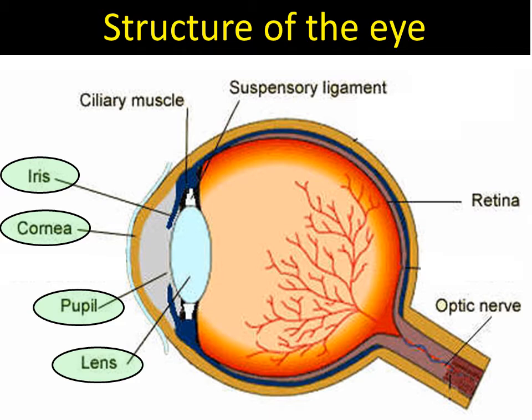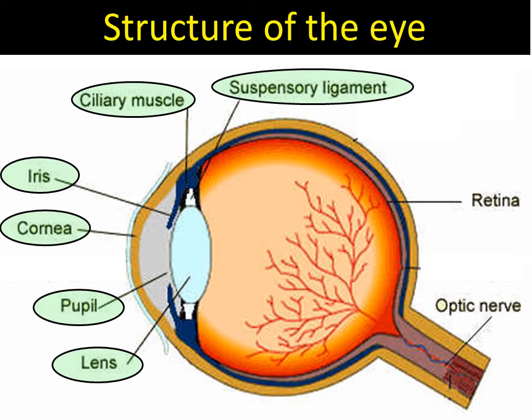The lens is able to change shape using the ciliary muscles — highlighted here. They are the muscles that contract, pulling tight, which pulls the lens tight and makes it thinner. If they relax, the lens gets fatter and helps you focus on things closer to it. The ciliary muscles are connected to the lens via ligaments — these ones are called the suspensory ligaments.